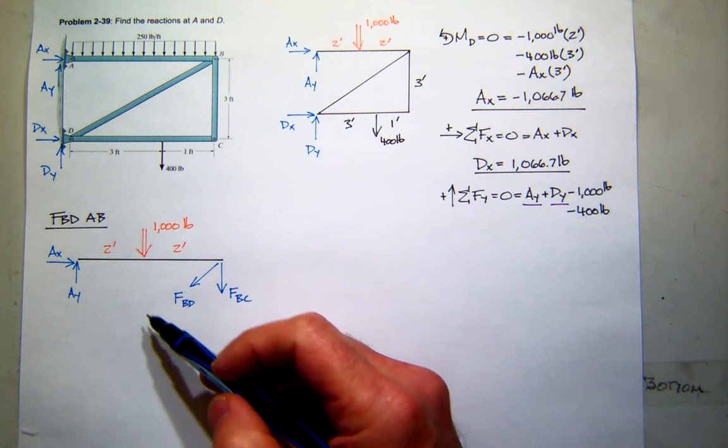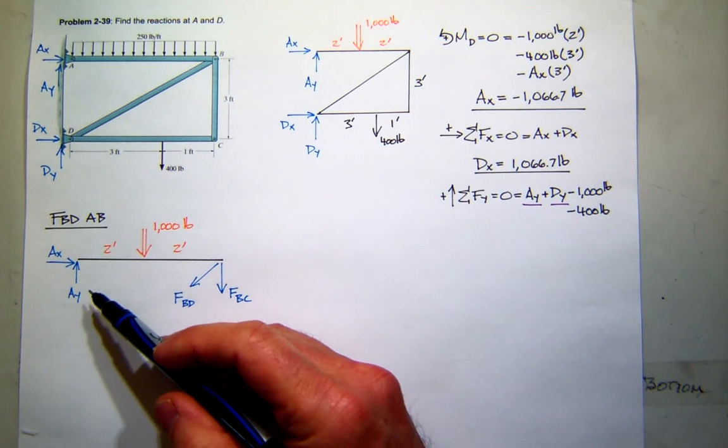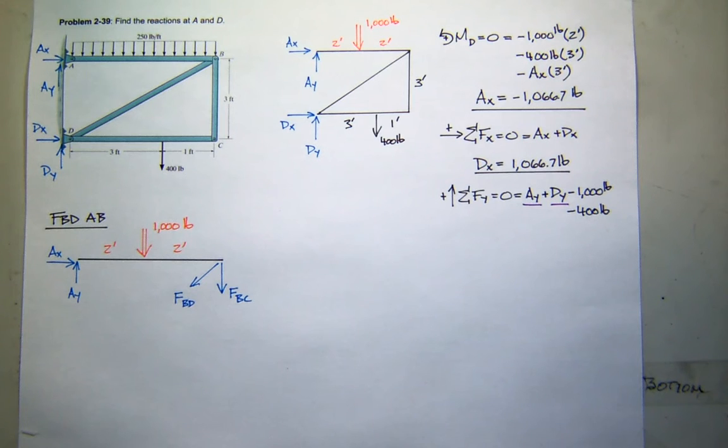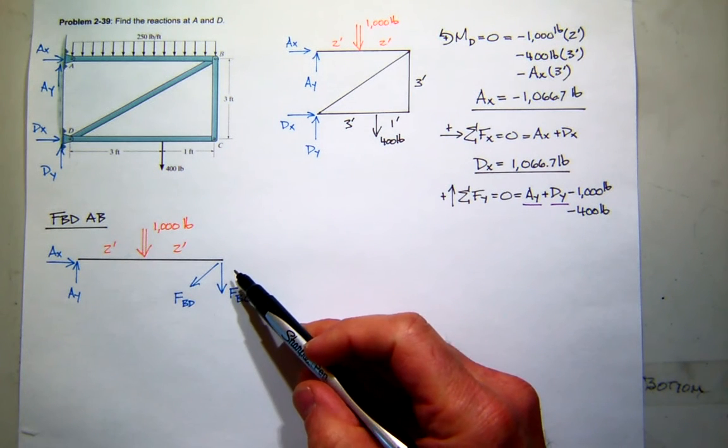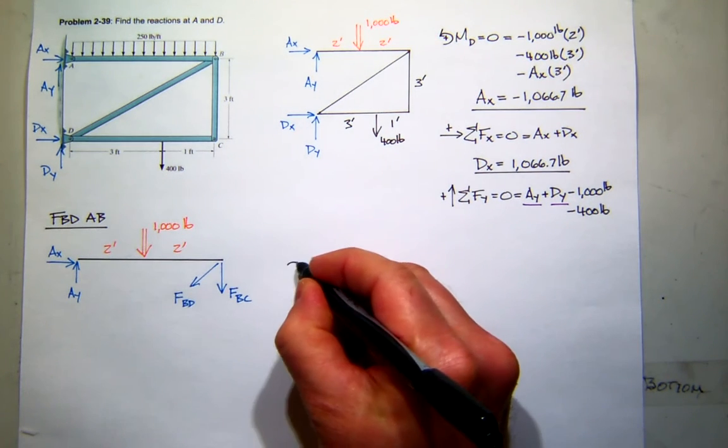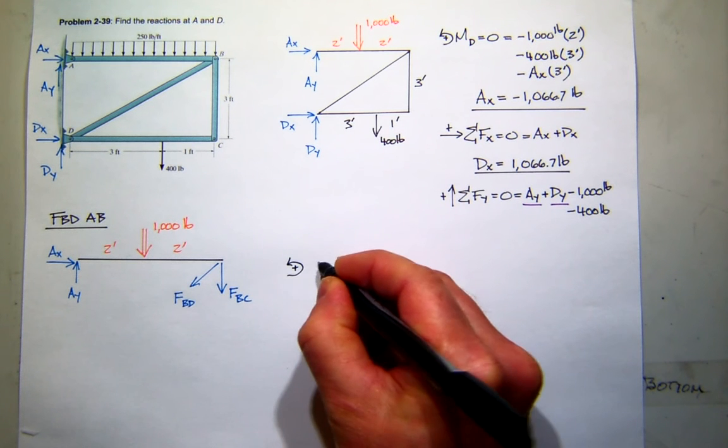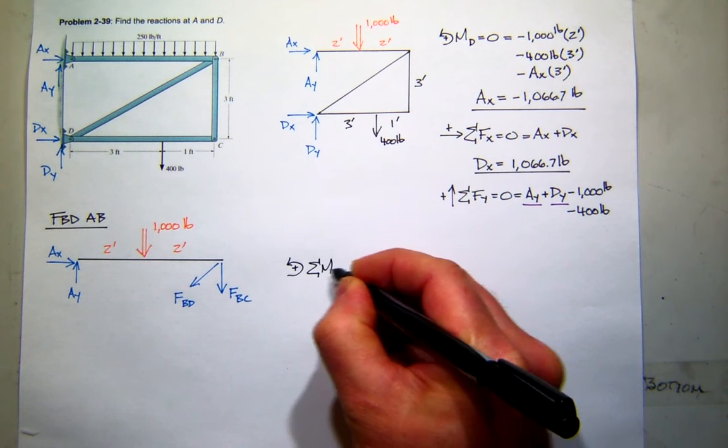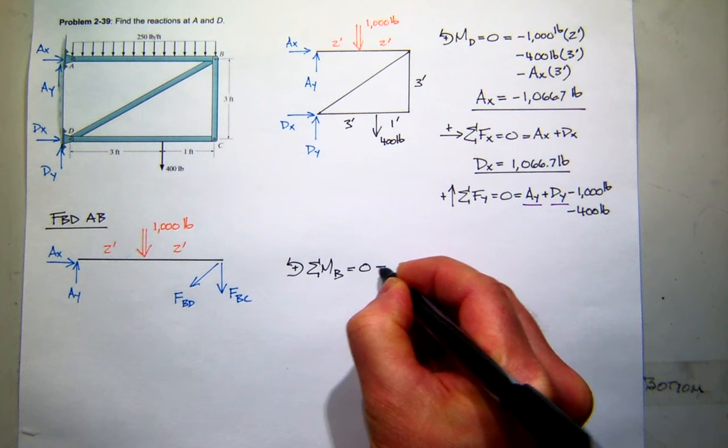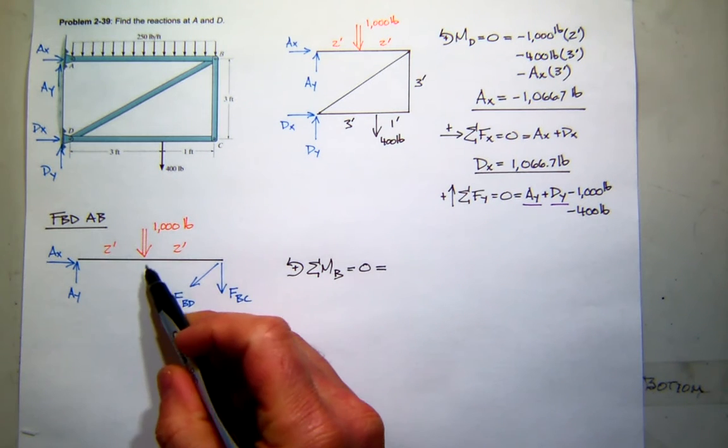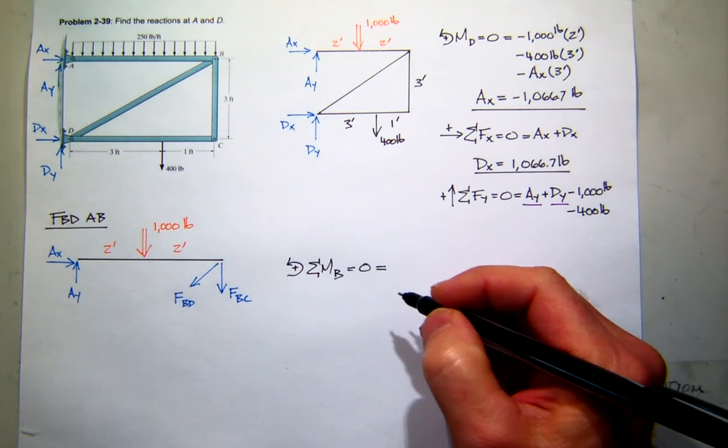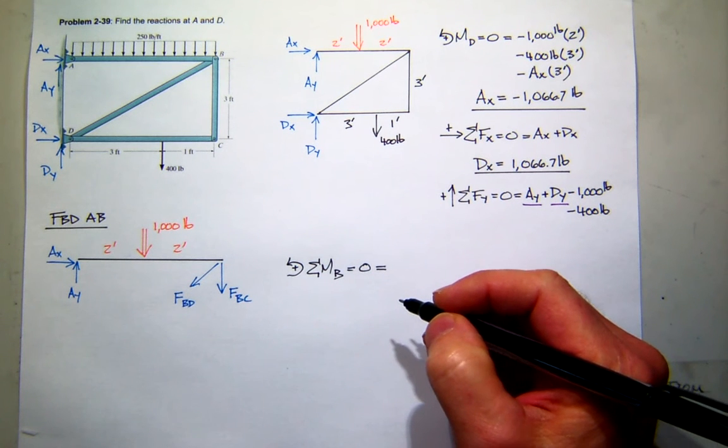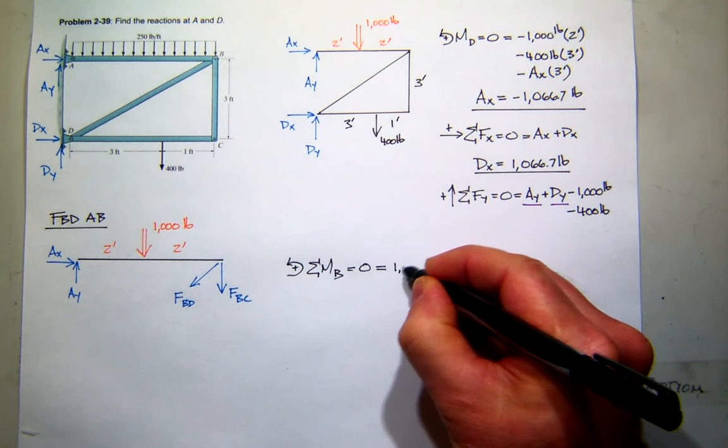But now I have a new free body, which gives me three new equations of equilibrium I can write. Now, I'm only trying to find Ay. How can I find Ay with one equation? Take the moments about B. So if I sum my moments about point B, what do I get? Well, this thousand creates what kind of moment about B? Positive or negative? I heard both answers. Positive, right? Right hand rule, positive. So it's going to be a thousand pounds. And what's the moment arm? Distance is two feet.